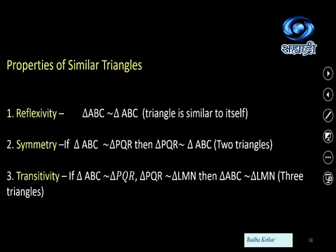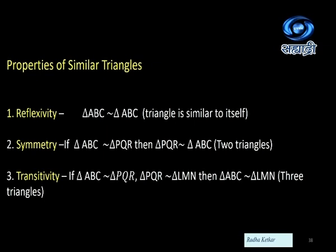Now, properties of similar triangles. First: reflexivity — every triangle is similar to itself. So triangle ABC is similar to triangle ABC. Second: symmetry — if triangle ABC is similar to triangle PQR, then triangle PQR will also be similar to triangle ABC. So if the first triangle is similar to the second, then the second is also similar to the first.